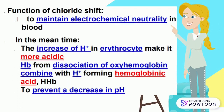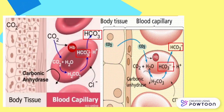In the meantime, the increase of hydrogen ion in the erythrocyte makes it more acidic. Hemoglobin from the dissociation of oxyhemoglobin combines with the hydrogen ion, forming hemoglobinic acid, HHb, to prevent a decrease in pH.